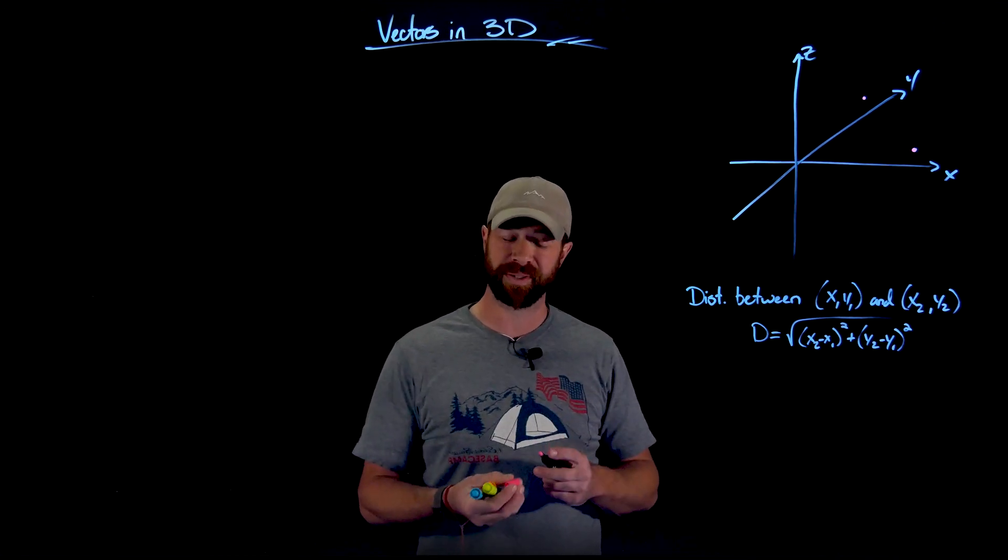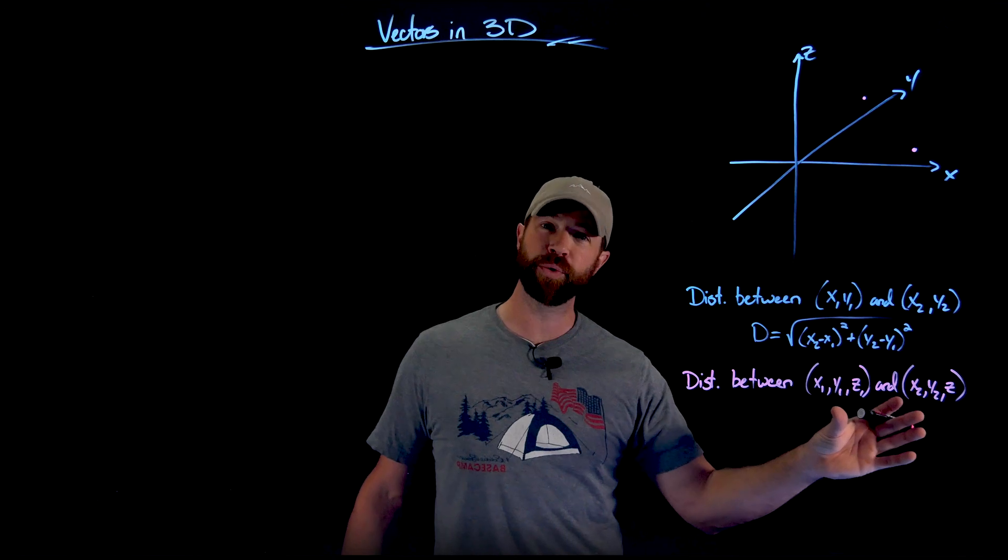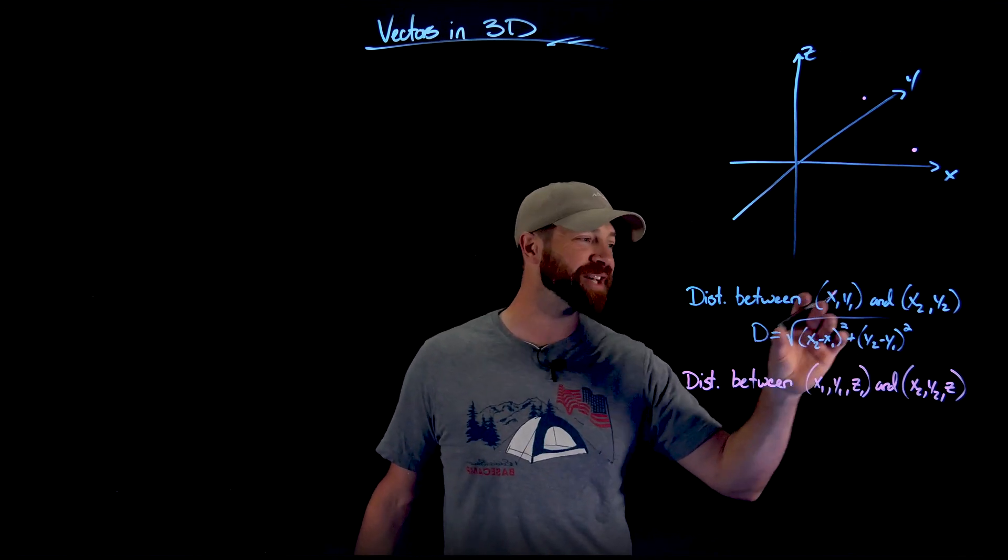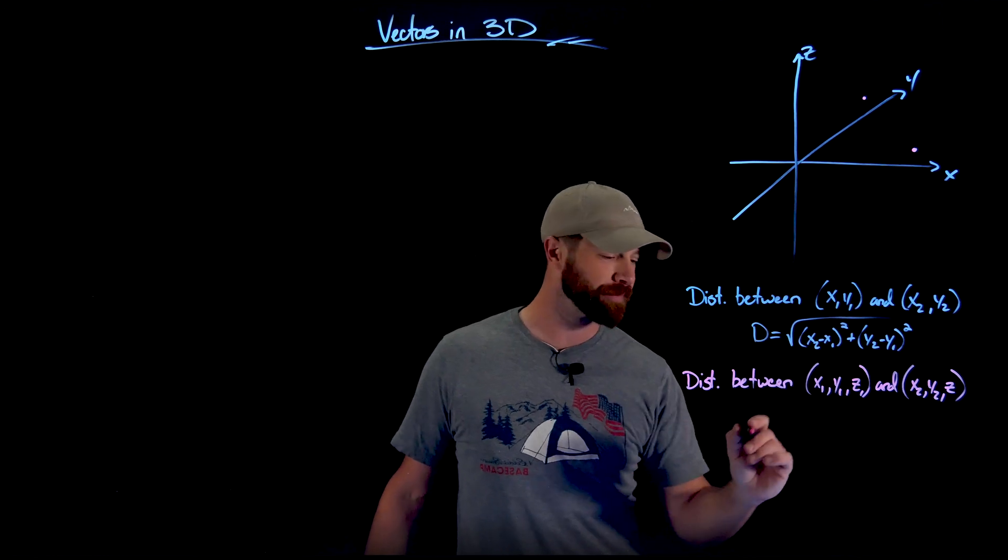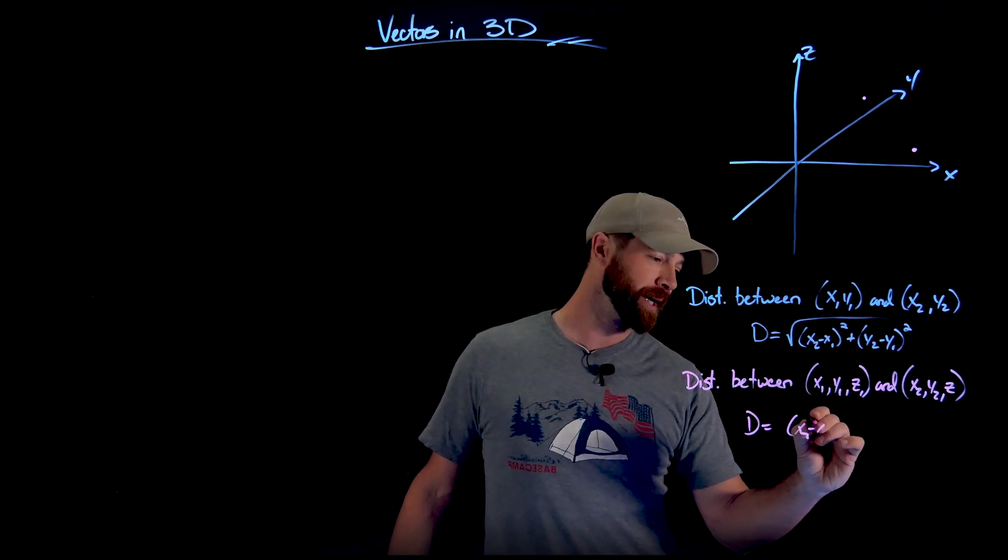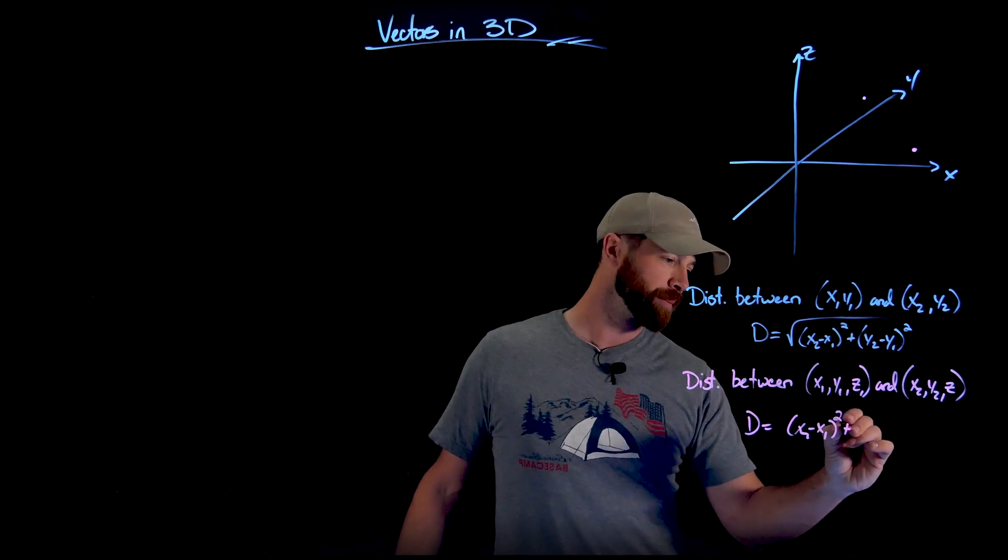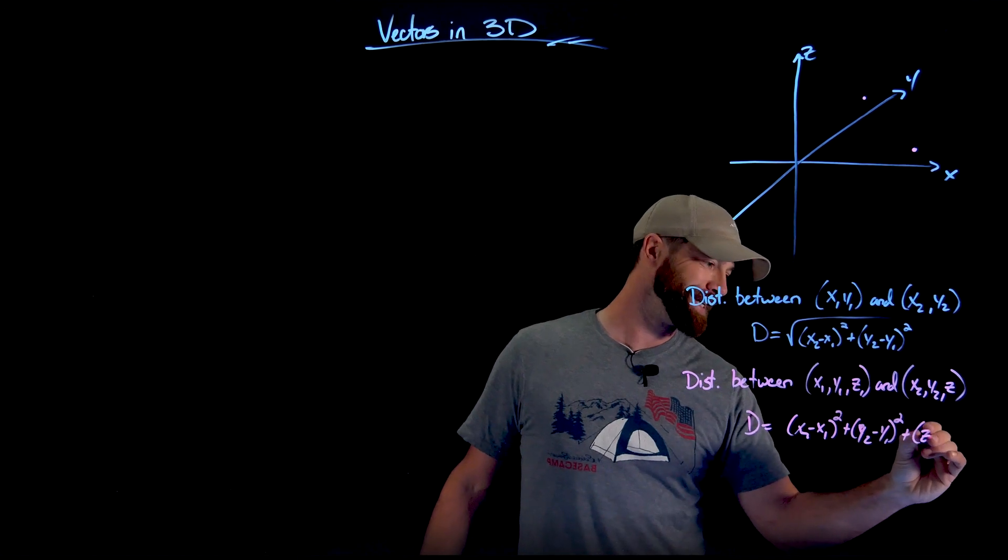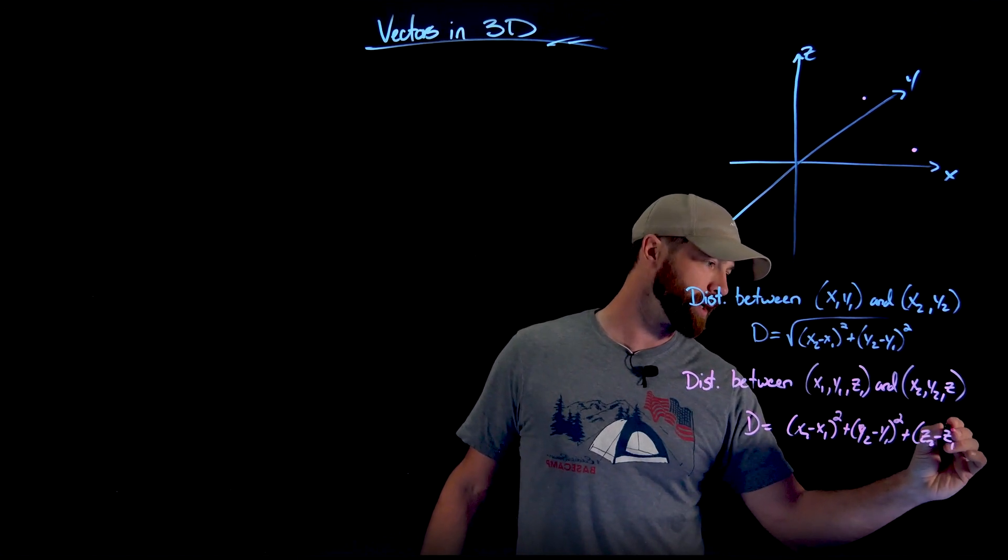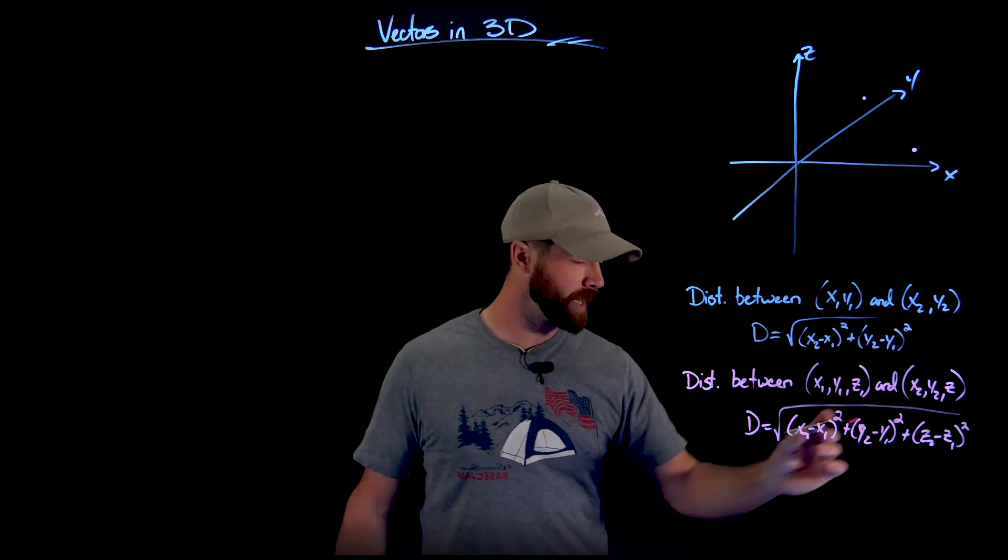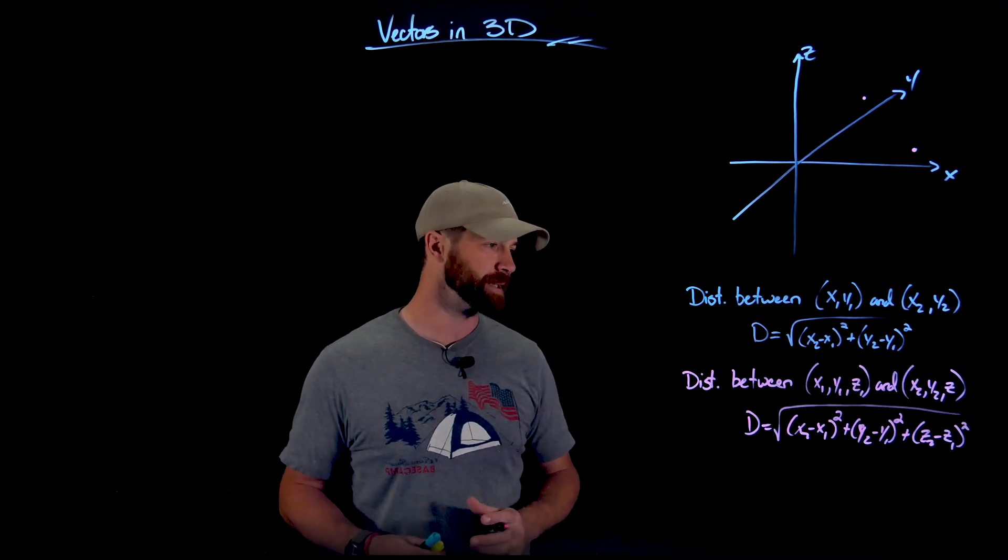Or in other words, the distance between two ordered triples is almost exactly the same. All we need to add under this square root is that term for the Z's. We get that the distance is X2 minus X1 squared, plus Y2 minus Y1 squared, plus Z2 minus Z1 squared. And then we just apply the square root to all of that, or apply a square to that distance.